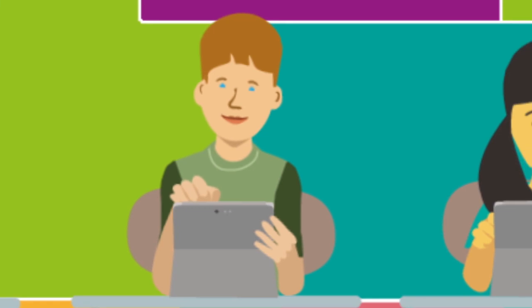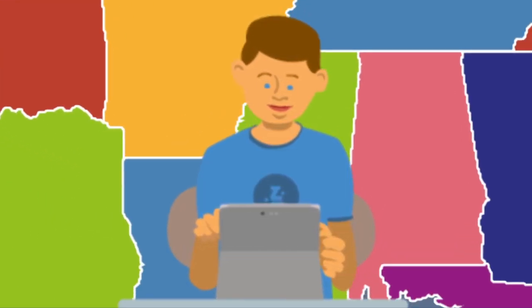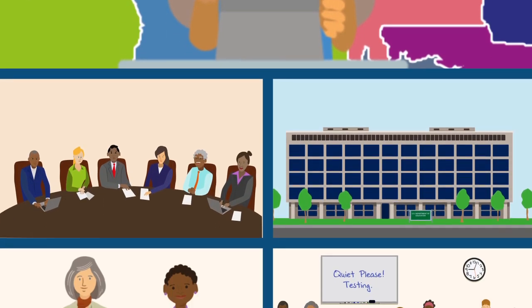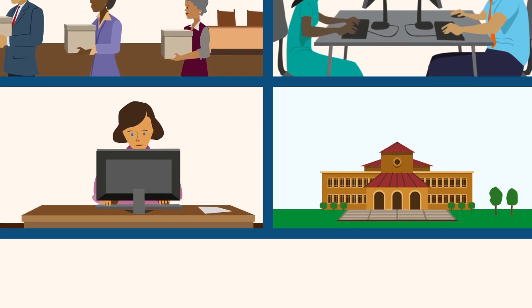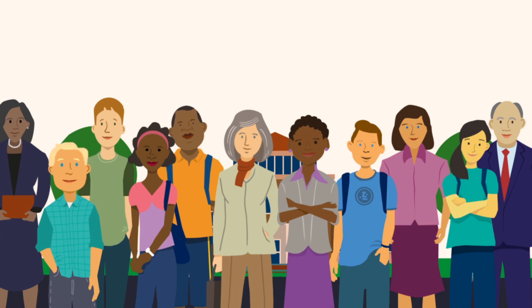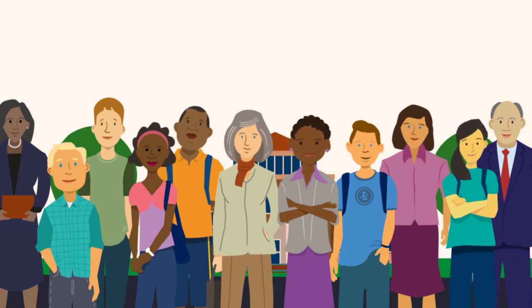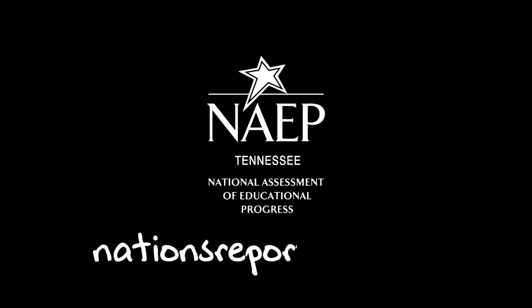When you're measuring what the students of our nation know and can do, it takes cooperation from everyone in the country, no matter the size of the state or school. Local participation is vital to a fair and accurate assessment process. By working together, we can make sure students get their best results on the nation's report card. To learn more and to see actual questions used on previous NAEP tests, visit us at nationsreportcard.gov.